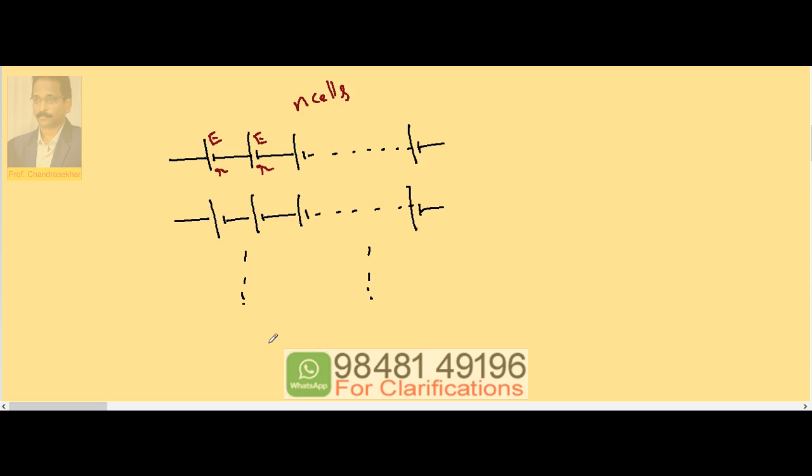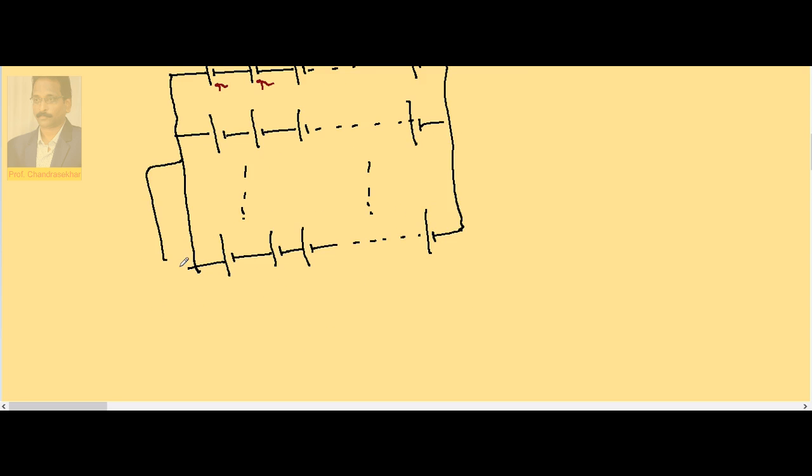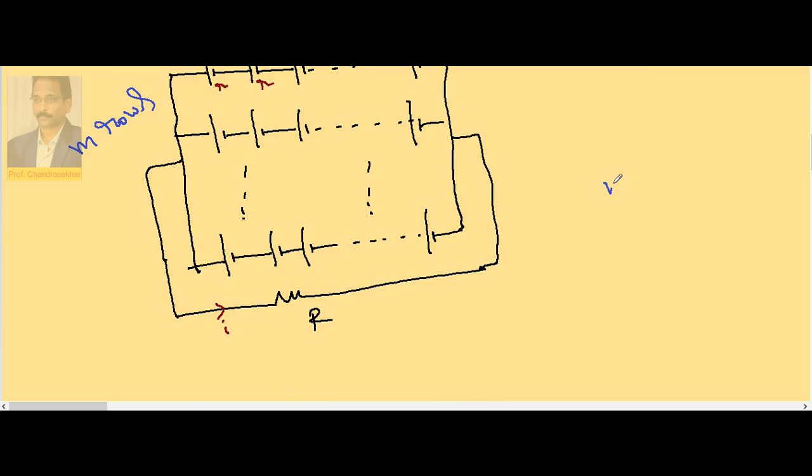Each row has EMF E and internal resistance r. Like that we have m rows. So this is what we call a mixed grouping. This battery tries to send the current through external resistance R. Imagine m rows are present, each row contains n cells, and there are m rows, so total number of cells we are using is n times m.